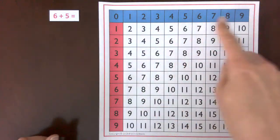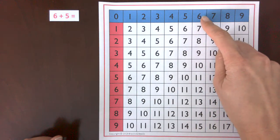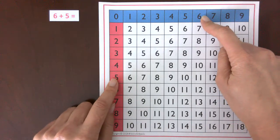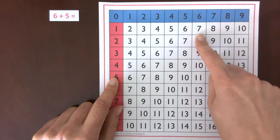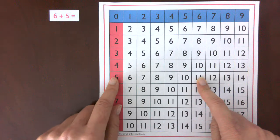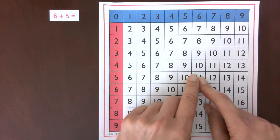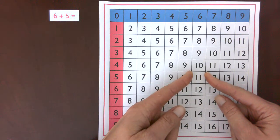The first step is to find the first addend across the top, and then to find the second addend across the side. You're going to slowly run your finger down this column until it's in the same row as your other finger, and then that finger slowly slides across that row. Where they end up is the sum or the answer.